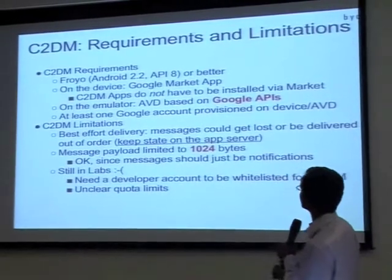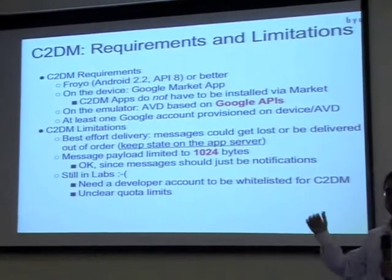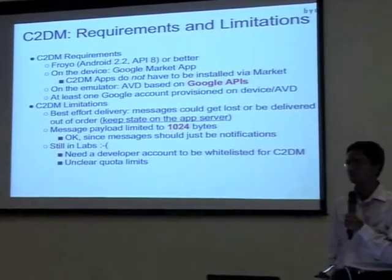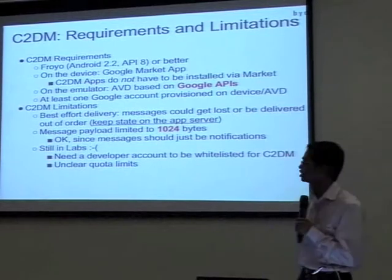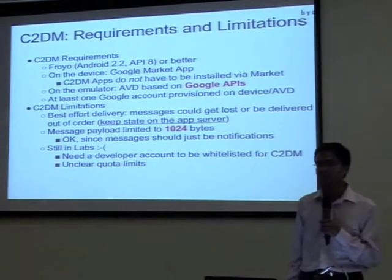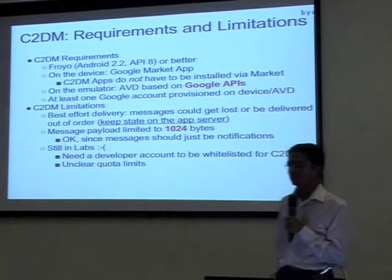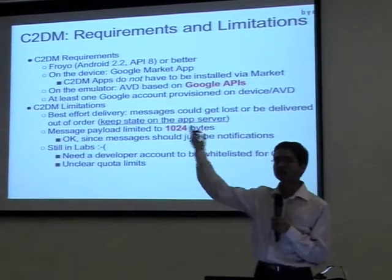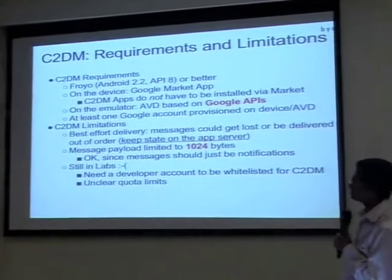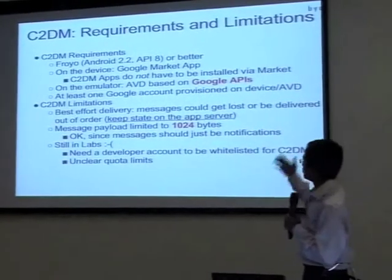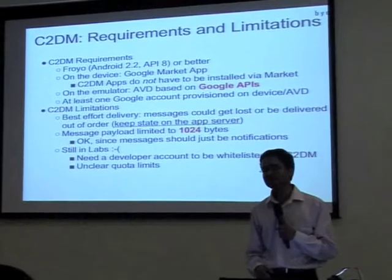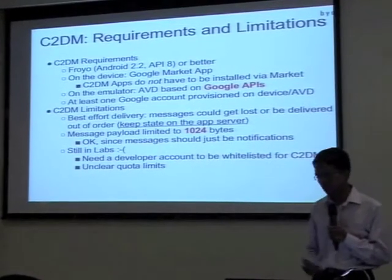Regarding requirements and limitations: C2DM is supported from Android 2.2 onwards. It requires the device to have the Google Market app installed, which installs the Google Services Framework (GSF). On the emulator you require Google APIs installed above 2.2. At least one Google account must be on the device, used for connection and identification when sending data to that device. The payload is fixed at 1024 bytes — you cannot exceed that.